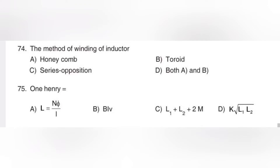The method of winding of an inductor. Option A: honeycomb. Option B: toroid. Option C: series opposition. Option D: both A and B — honeycomb and toroid. Both A and B is the answer.